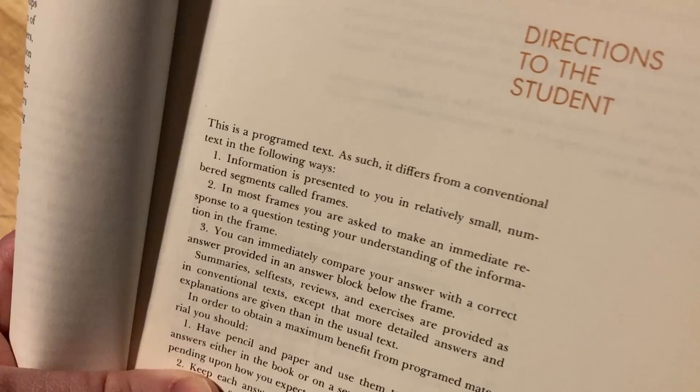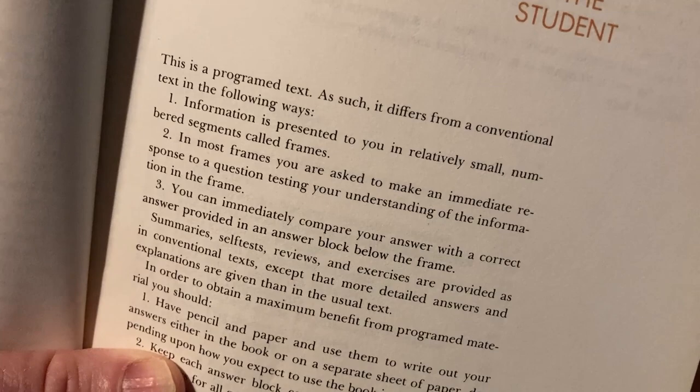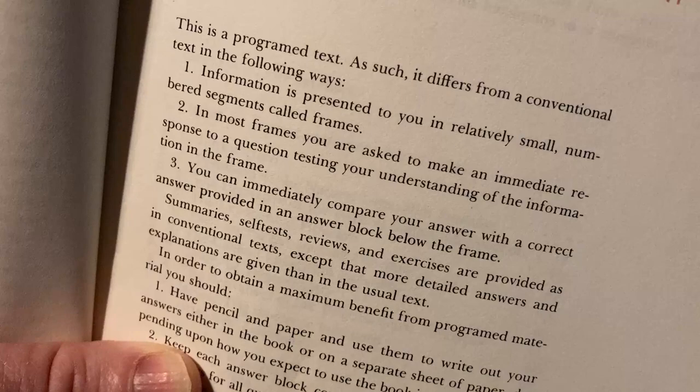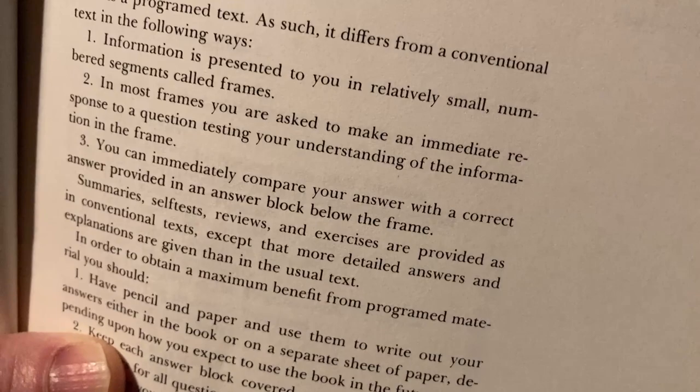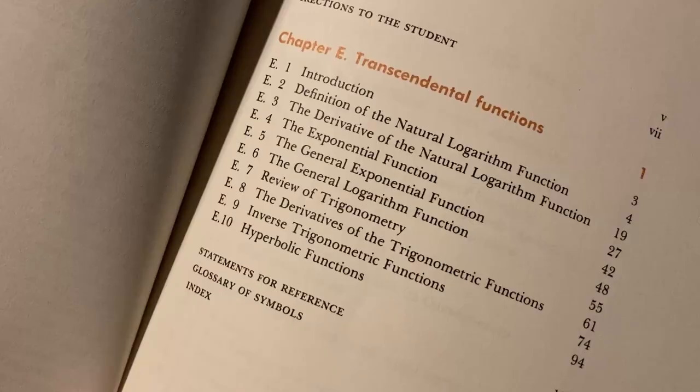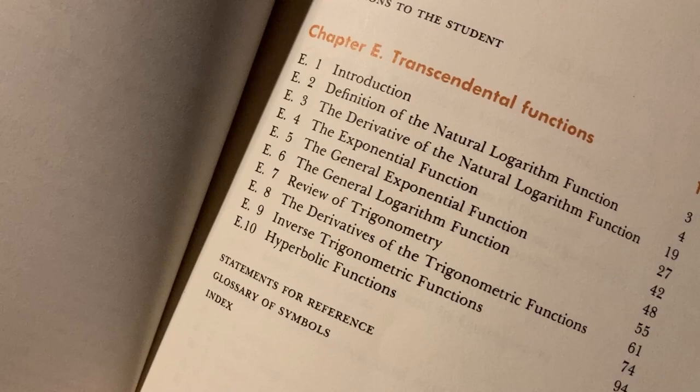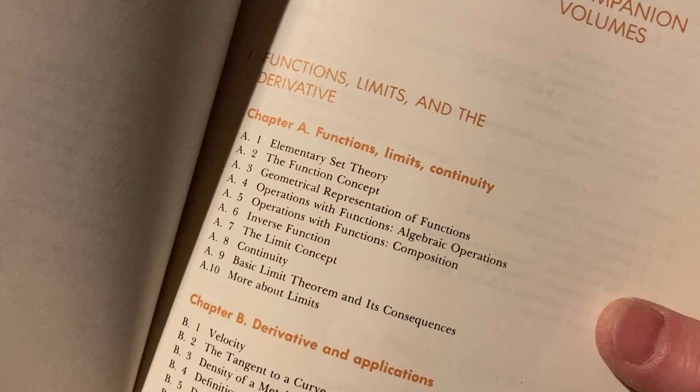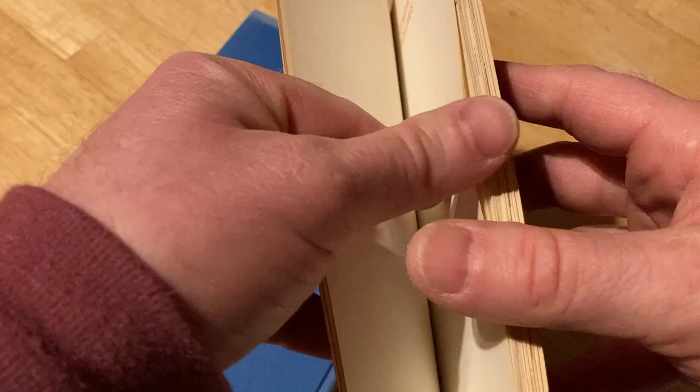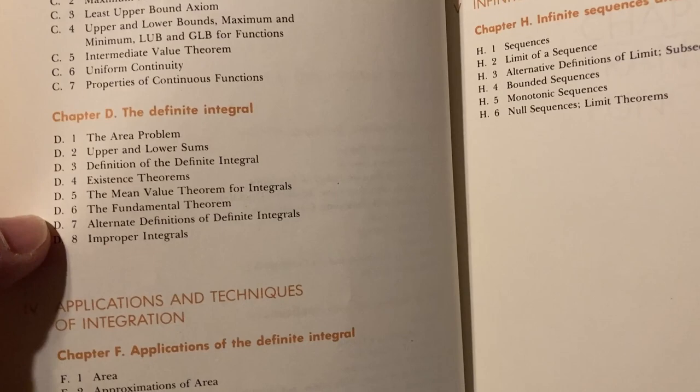This book is very different from other books. It explains how to use the book. It says that information is presented to you in relatively small numbered segments called frames. In most frames, you are asked to make an immediate response to a question, testing your understanding of the information in the frame. You can immediately compare your answer with correct answer provided in an answer block below the frame. This one only covers chapter E, which is transcendental functions. There are other chapters, but they're found in other books which unfortunately I don't have. They give you all of the contents for the other books as well. And it's just basic calculus.